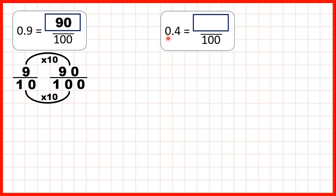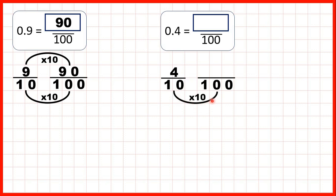Now we have 0.4. Again, the first digit after the decimal point tells us how many tenths we have, so that's 4 tenths. We need a denominator of 100, and 10 times 10 is 100. So to get our numerator we need to multiply 4 by 10, and that gives us 40.